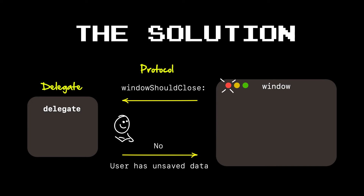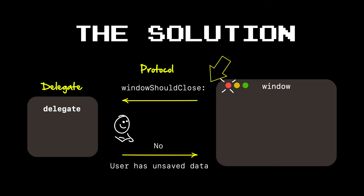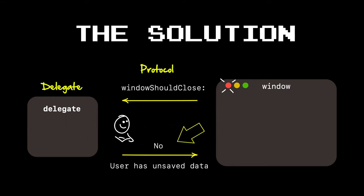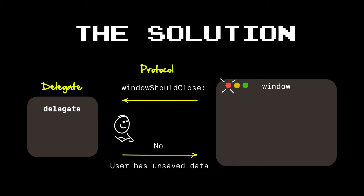Apple engineers solve this problem using the Protocol Delegate pattern, and it works like this. First, they define a protocol — basically a method that anyone can call to tell a window when it should or should not be closed. When someone hits that red button to close the window, our window asks the other code: hey, should this window close? That's called the Delegate. We're delegating that responsibility to the client code, and they can call us back and say no, don't close the window — I've got unsaved data. The beauty of this is we don't need to know what goes on in the delegate.